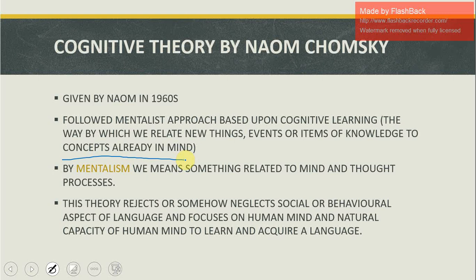This theory rejects or somehow neglects the social or behavioral aspect of language and focuses on human mind and the natural capacity of the human mind to learn and acquire language. According to Noam Chomsky, a newborn baby has the natural capacity and natural ability to learn language. That is why he or she is able to learn complex structures, vocabulary items, and more, because the child has natural mental ability to learn.